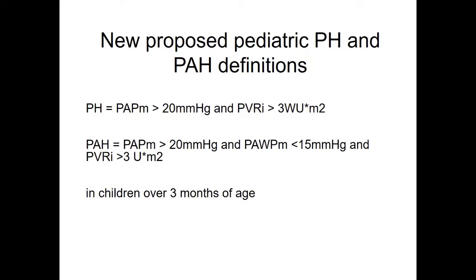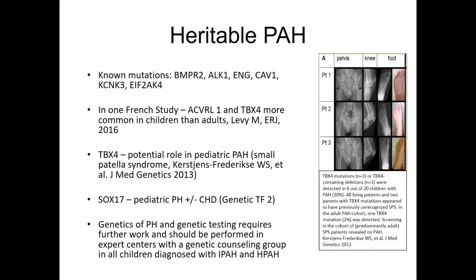The guidelines from the last World Congress included a key change in the definition of pulmonary hypertension. After much discussion in the pediatric working group, we accepted the new definition: pulmonary hypertension is now defined as a mean pulmonary arterial pressure over 20 mmHg, and pulmonary arterial hypertension when wedge pressure is less than 15 and pulmonary vascular resistance is more than 3 units. We added that this applies to children over 3 months of age, as transient forms of PH may still occur in the first 3 months.